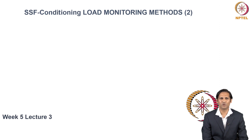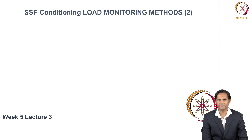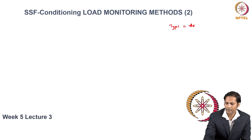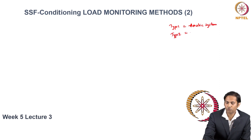Before we go ahead, let's recall the conditioning fitness variable for sports specific fitness. Conditioning is the ability of your energy system to fulfill the demands of a sports activity. In Type 1 conditioning you try to increase the aerobic system, and in Type 2 conditioning you try to develop your aerobic energy system along with your neuromuscular energy system.